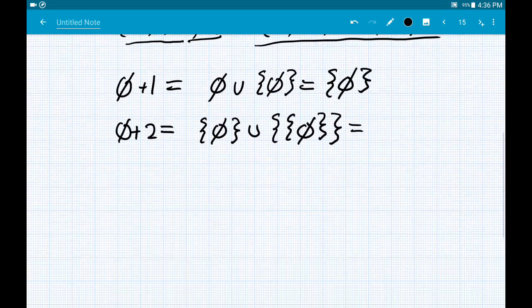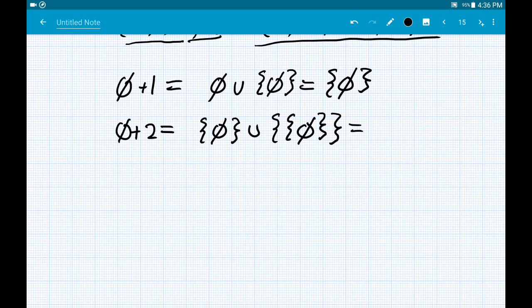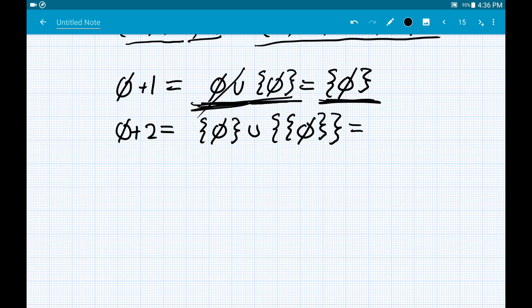It's also worth knowing what the empty set plus 1 is. It is, of course, again, the empty set union the set of the empty set. Now, unioning the empty set never gives you anything, so it might as well just not be there. And we just take all of the elements of the empty set to put into the union. So the empty set plus 1 turns out to be just the set of the empty set.